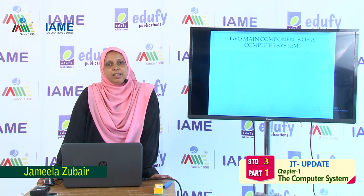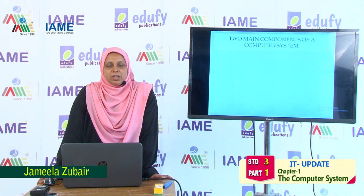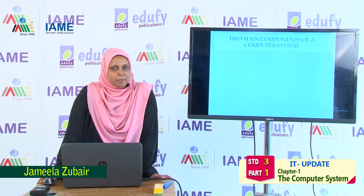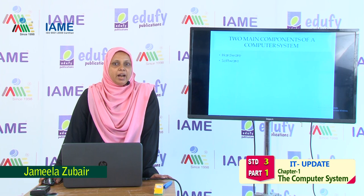Now you have seen the computer. You know there is a monitor, a keyboard, CPU, and a mouse. A computer system is made up of two components. How many components? Two components. And what are the names of those two components? One is hardware and the other one is software. So which are the two main components of a computer system? Hardware and software.